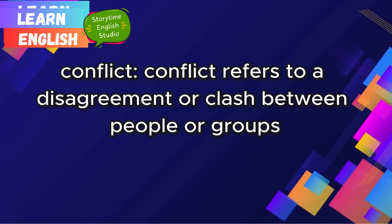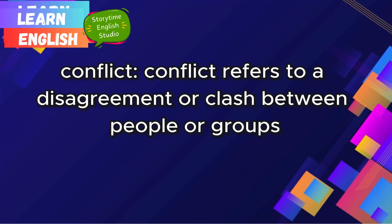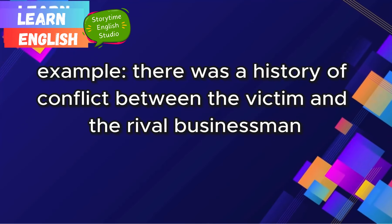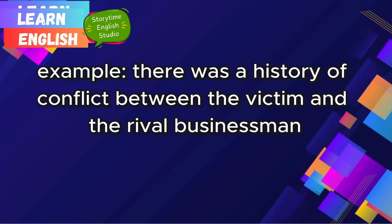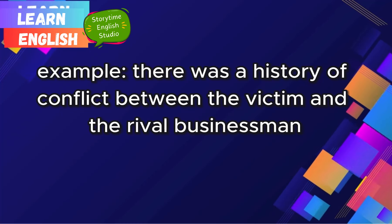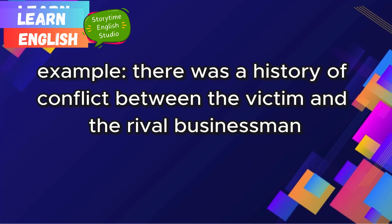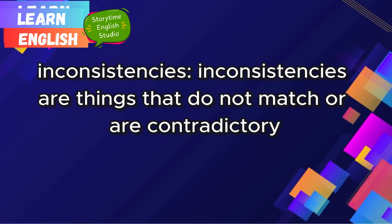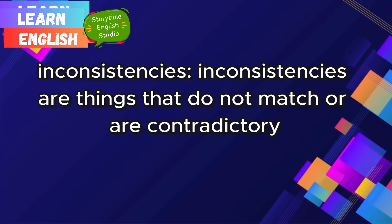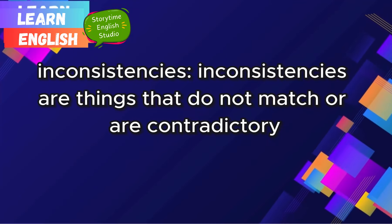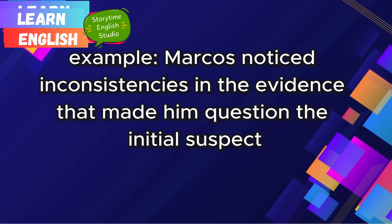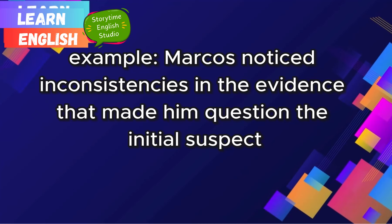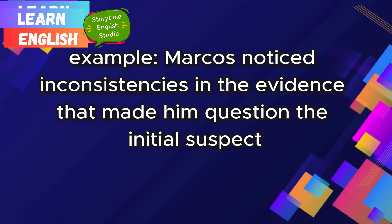Conflict — conflict refers to a disagreement or clash between people or groups. Example: There was a history of conflict between the victim and the rival businessman. Inconsistencies — inconsistencies are things that do not match or are contradictory. Example: Marcos noticed inconsistencies in the evidence that made him question the initial suspect.